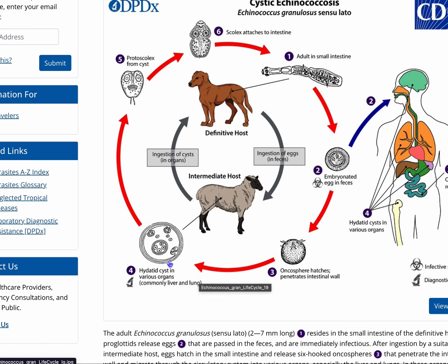These eggs will develop into hydatid cysts. The cycle continues when the canine eats the meat of the intermediate host containing the hydatid cysts, and then they develop into the adult forms.